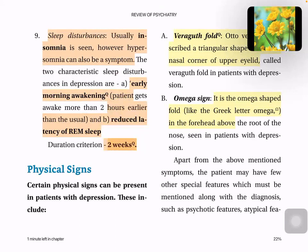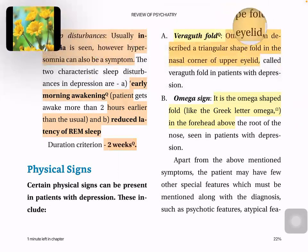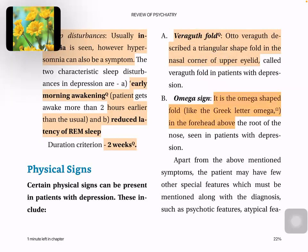There are certain physical signs of depression. For example, we have Veraguth folds — triangular-shaped folds around the nasal corner of the upper eyelid. Then we have the omega sign — a fold appearing above the root of the nose in an omega shape on the forehead. The patient is always looking depressed and frustrated.